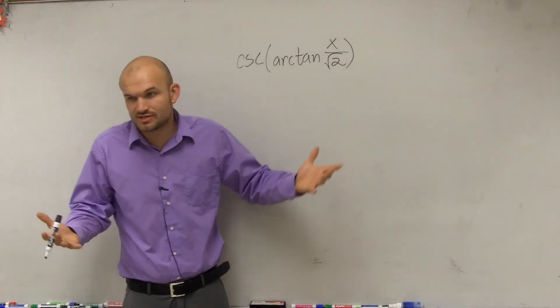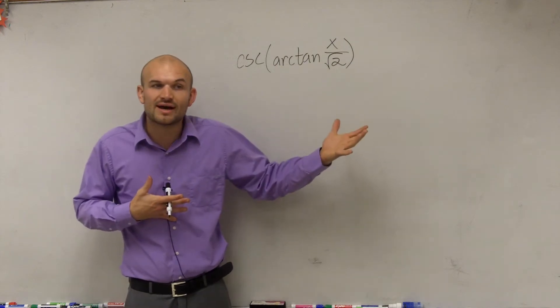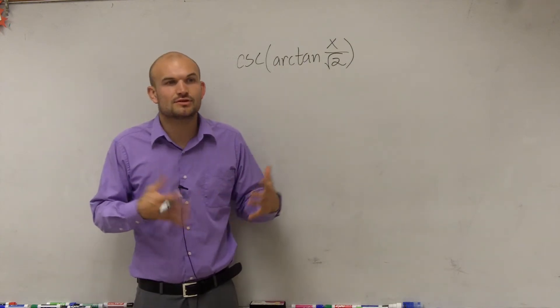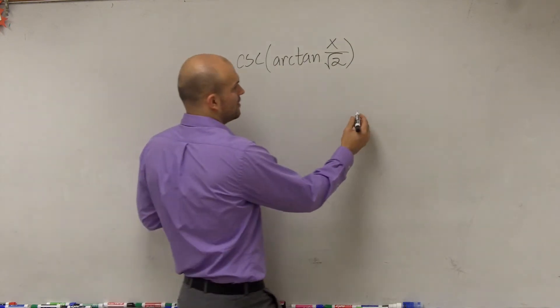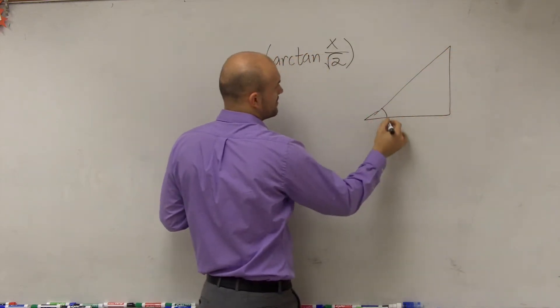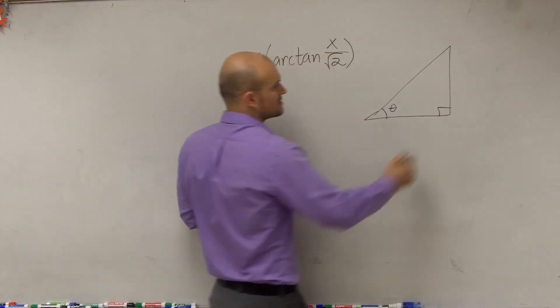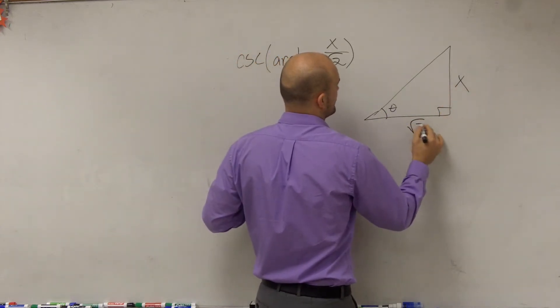So to take the inverse of it, the best thing we can do is we can't find it on the unit circle because we don't know the value of x. So what we're going to have to do is just create another triangle. So what we need to do is remember, what does the tangent represent when dealing with a triangle? Opposite over adjacent. So you say x over square root of 2.